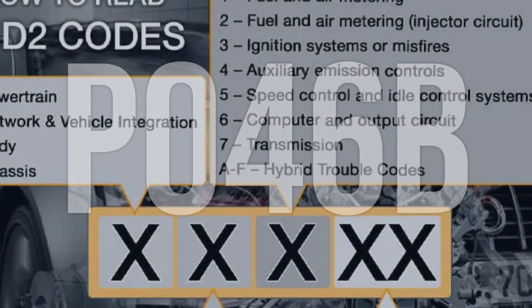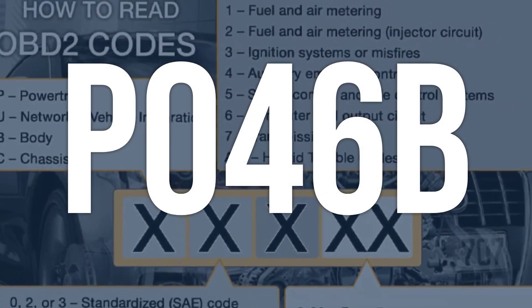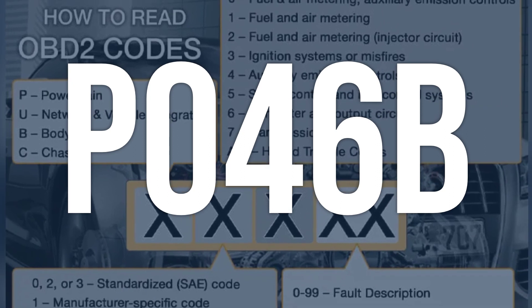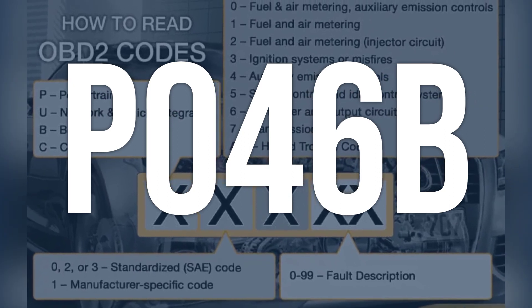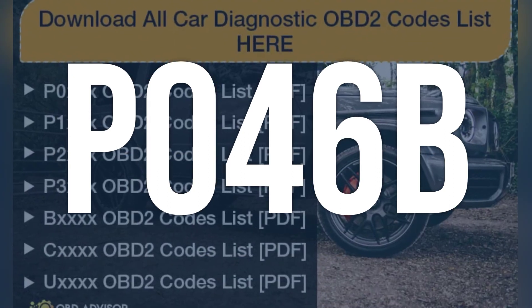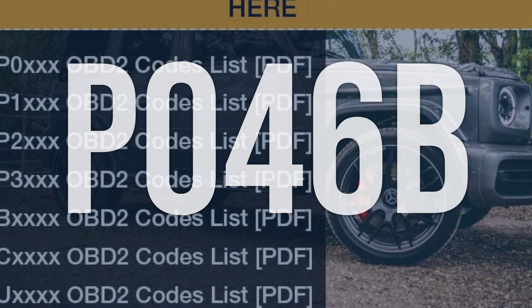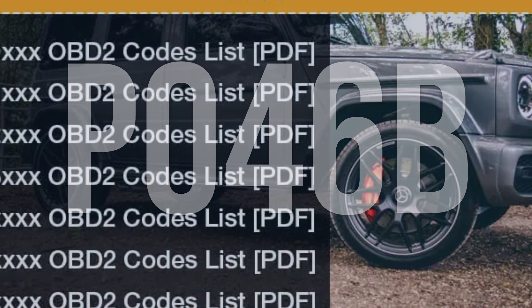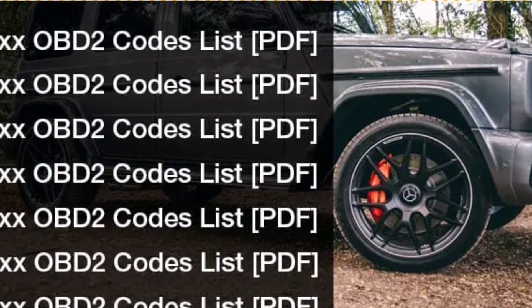The OBD-2 fault code P046B indicates a failure in the correlation between the temperature sensors in the catalytic converter. This can lead to improper functioning and overheating of the catalytic converter.